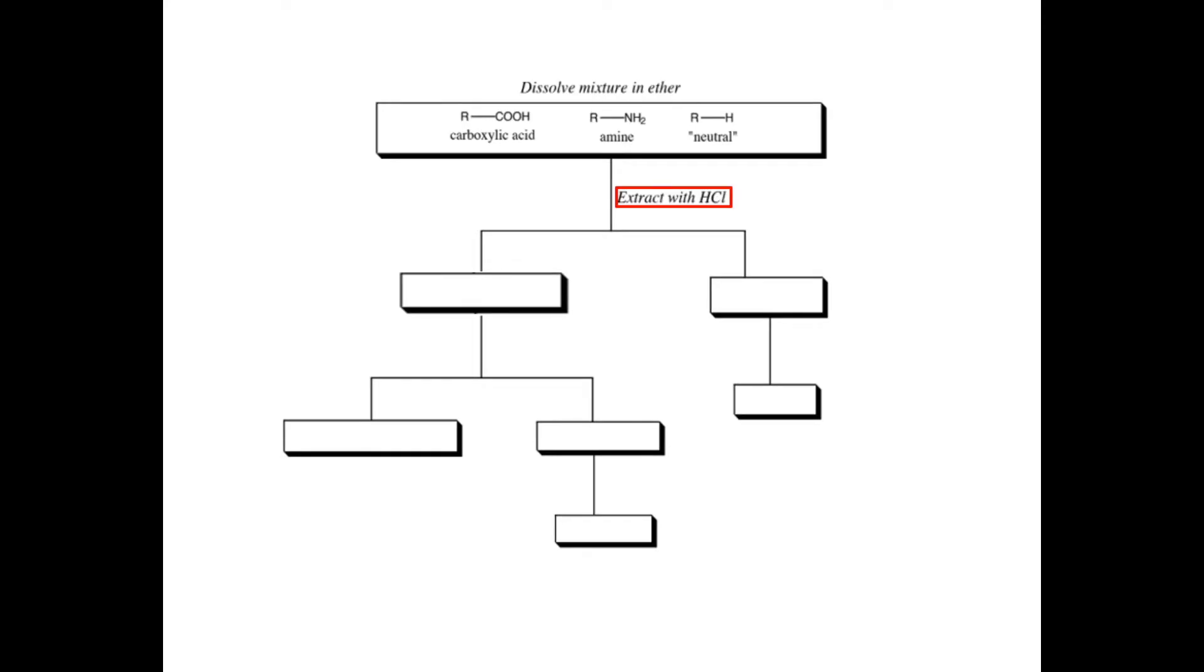In the first step, we're going to take that mixture of the carboxylic acid, the amine, and the neutral compound, and we're going to extract it with HCl. Our HCl is in water. So that HCl mixture that we add to the separatory funnel becomes our aqueous layer. When you react carboxylic acid with HCl, nothing happens. When you react an amine with HCl, something happens.